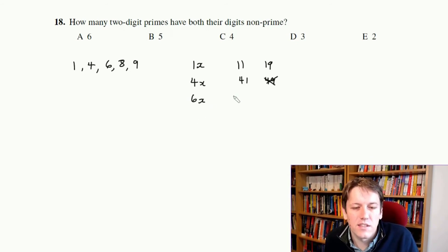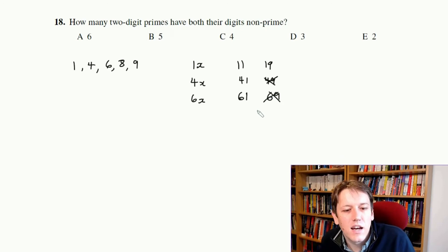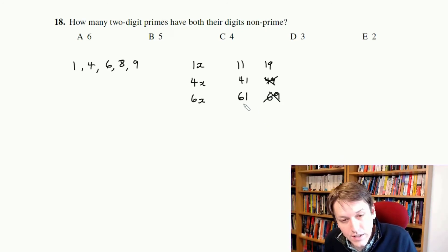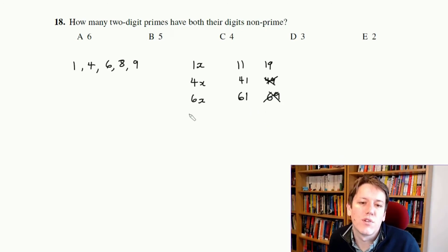So then I just check the things that are 6 something, so I just need to check 61 and 69. 69 is obviously a multiple of 3 here, and 61 is prime because it doesn't have 2, 3, or 5 as a factor.